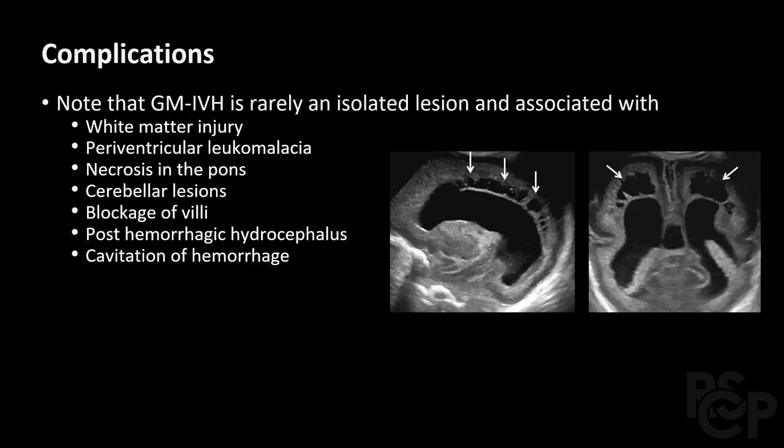There are many complications. It is important to note that germinal matrix intraventricular hemorrhage is rarely an isolated lesion and is associated with white matter injury, periventricular leukomalacia, necrosis in the pons, cerebellar lesions, blockage of villi, post-hemorrhagic hydrocephalus, and cavitation of hemorrhage. The image on the left shows how periventricular leukomalacia can be cystic, and the enlargement of the ventricles shown is chronic, secondary to white matter volume loss.